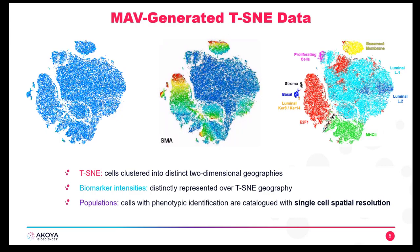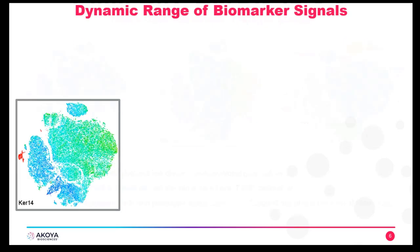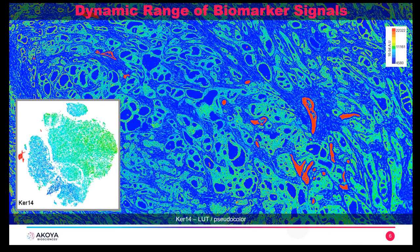We're able to use both clustering and TSNE plots to identify and annotate cells within the image. The range of biomarker expression present in the image — such as keratin 14, where blue is low expression and red is high expression — is reflected within the TSNE plot so we can see low and high signals, with keratin 14 positive cells located within a specific region.